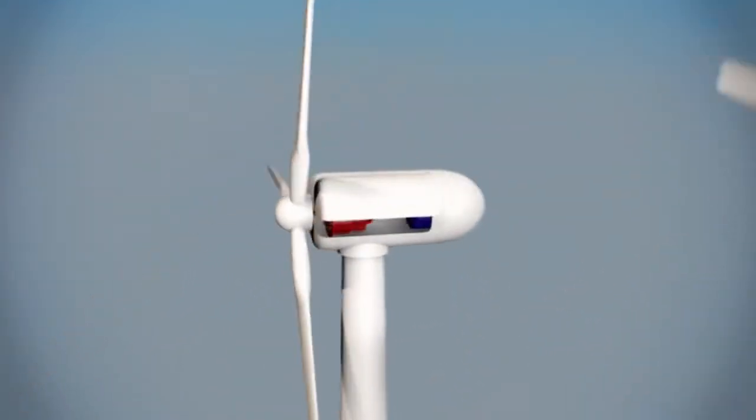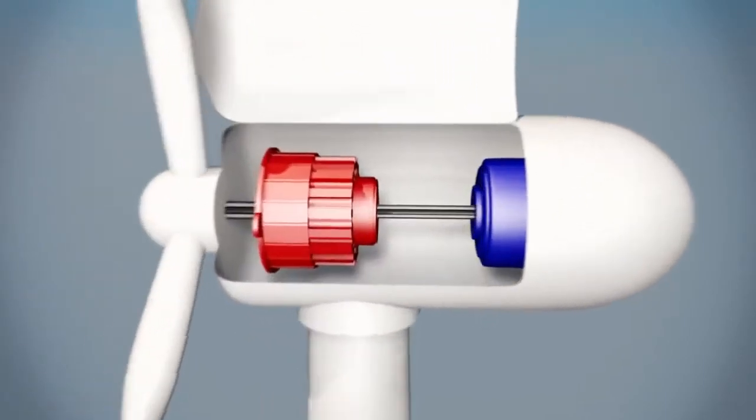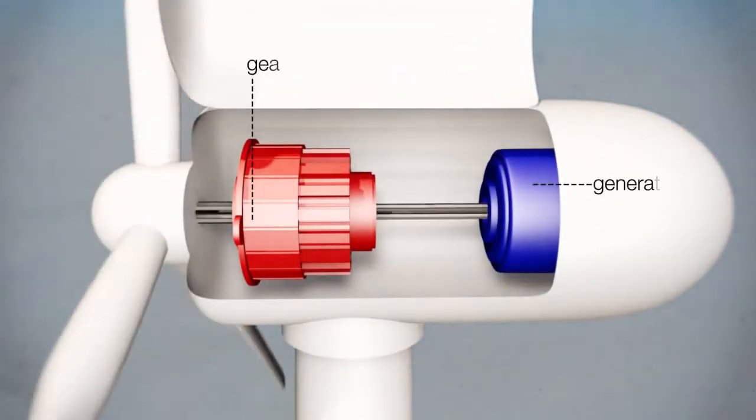Wind turbines have rotors which are moved by the power of the wind. A generator then creates electricity.